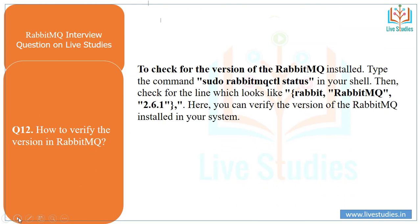Another question: how do you verify the version of RabbitMQ? To check the installed version of RabbitMQ, type the command: sudo rabbitmqctl status in your shell, then check for a line that looks like 'RabbitMQ 2.6.1' or similar. This is how you can verify the version of RabbitMQ installed on your system.